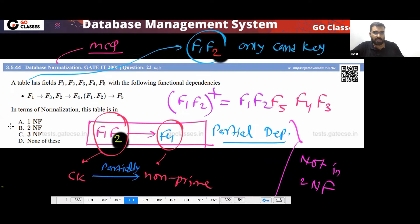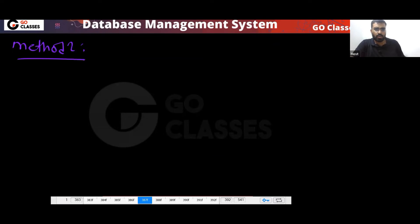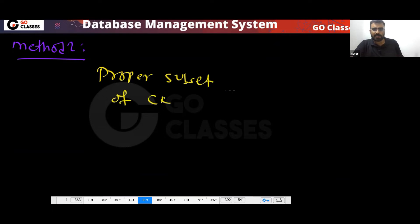Since this is not in 2NF, it is also not in 3NF or BCNF. So the answer will be 1NF. Now, what is another method? You can check proper subsets of the candidate key — method number two. Check whether a proper subset of the candidate key determines a non-prime attribute.